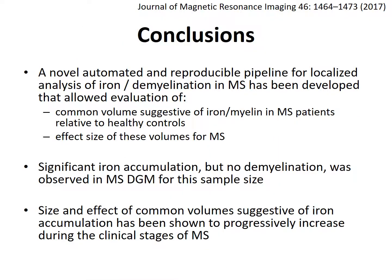In conclusion, a novel automated and reproducible pipeline for localized analysis of iron and demyelination in multiple sclerosis has been developed, allowing evaluation of common volumes suggestive of iron and myelin changes in MS patients relative to healthy controls. Significant iron accumulation but no demyelination was observed in multiple sclerosis deep gray matter for the studied sample size, and the size and effect of common volumes suggestive of iron accumulation has been shown to progressively increase across the clinical stages of MS.